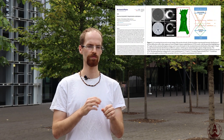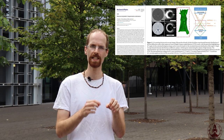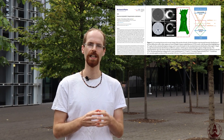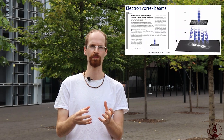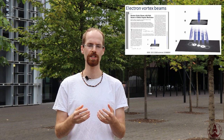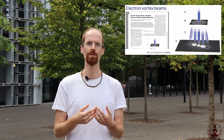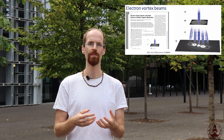For electron wave functions, this rotation means there is a rotating current, giving the vortex electron a magnetic moment. The research behind electron phase shaping and vortex electron beams aims to extract more information from magnetic samples in an electron microscope, because the vortex electron's magnetic moment makes it more sensitive to the magnetic properties of the sample.